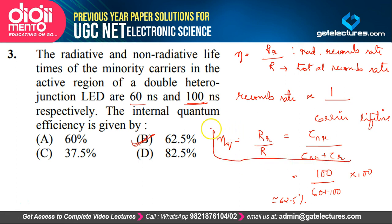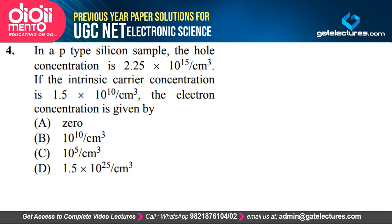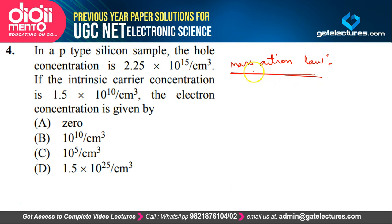This formula applies to normal LEDs as well. Moving to the next question: in a P-type silicon sample, hole concentration is 2.25 × 10^15 per cm³ and intrinsic carrier concentration NI is 1.5 × 10^10 per cm³. They are asking for electron concentration. We apply the mass action law: even in an extrinsic semiconductor, NP equals NI squared.